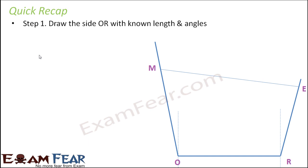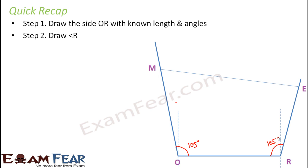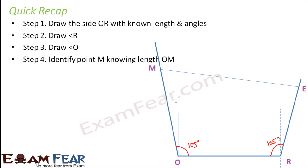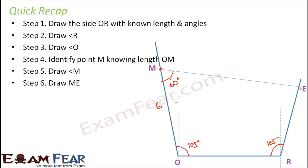Quick recap: First, draw side OR with known length 4.5 cm since both angle O and angle R were known. Then draw angle R and angle O. Identify point M by marking 6 cm along the ray from O, since OM = 6 cm. Then draw angle M = 60° at point M, and extend the ray until it meets the ray from R — that intersection is point E, so draw ME. The result: MORE is a complete quadrilateral.